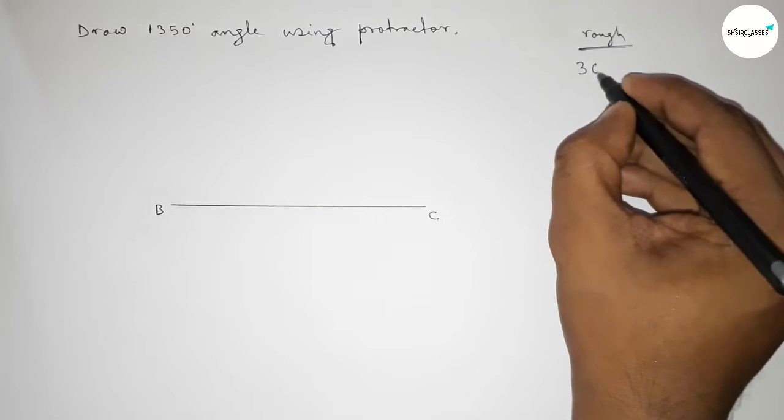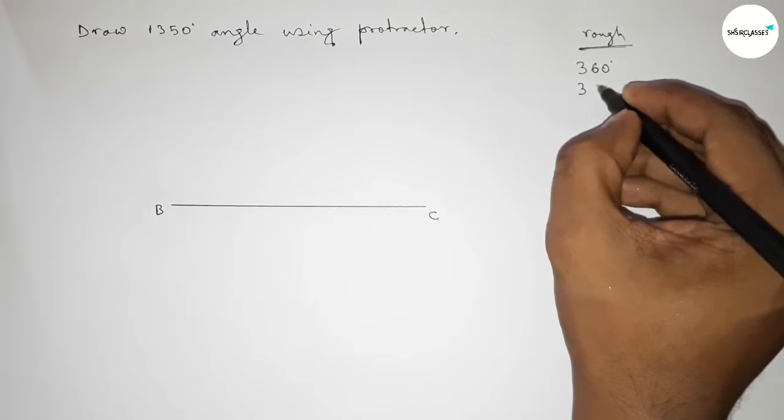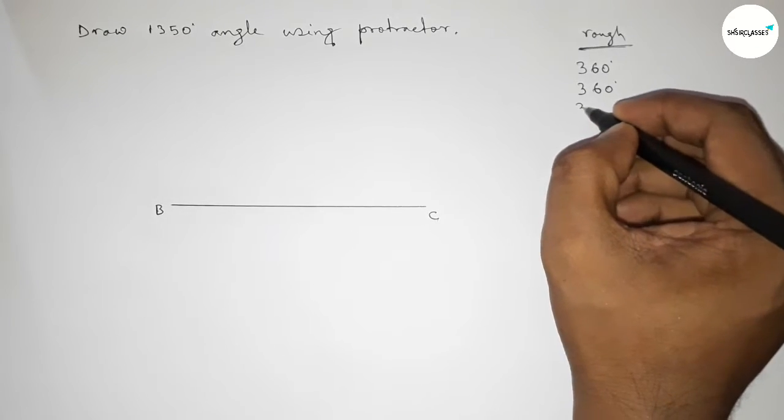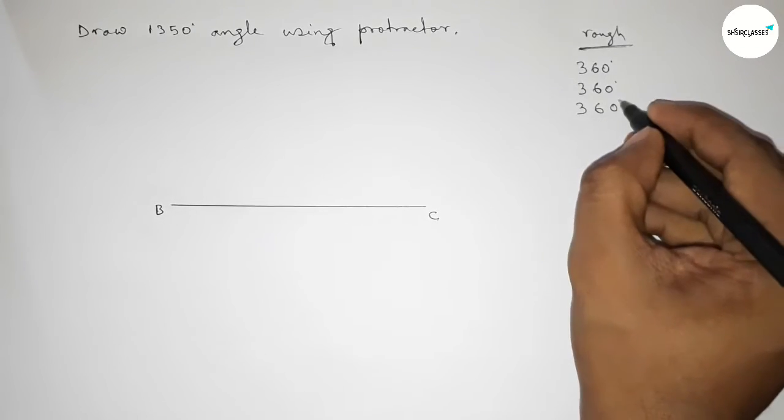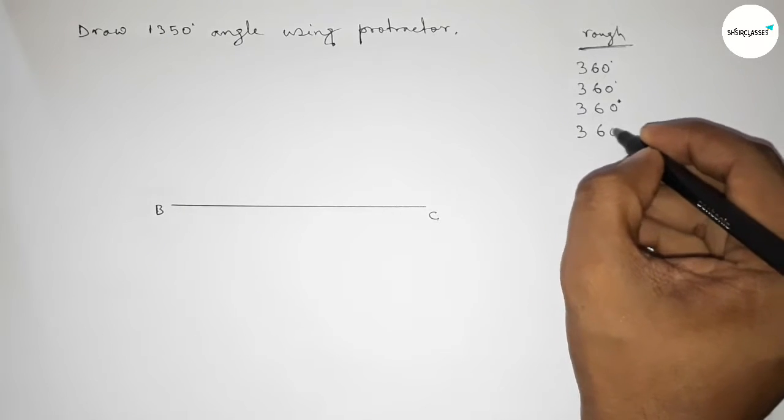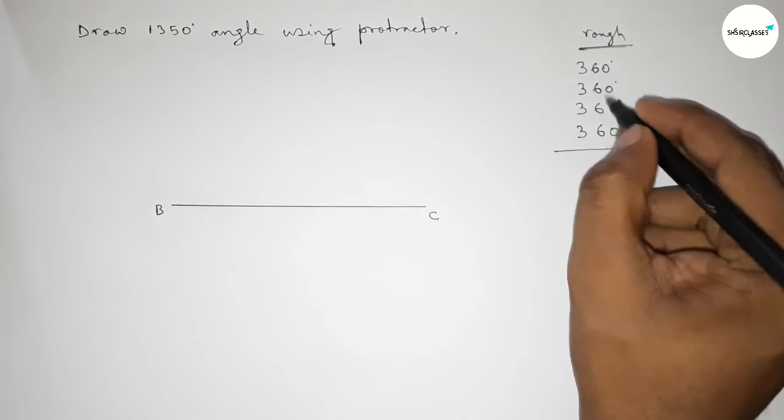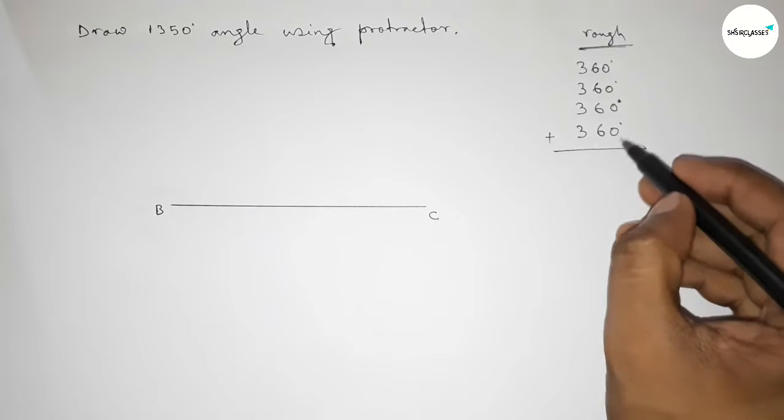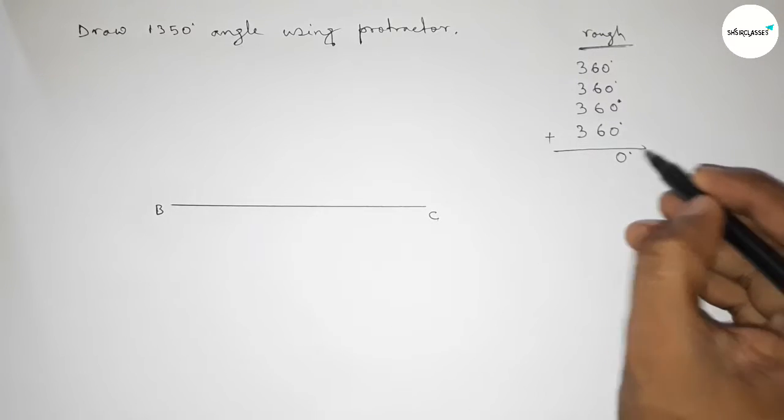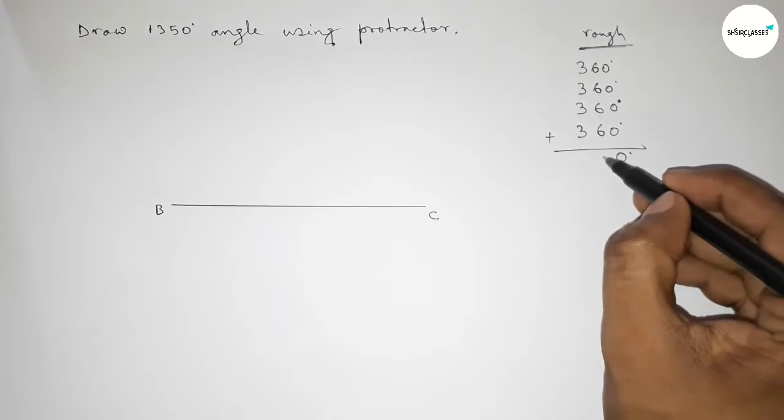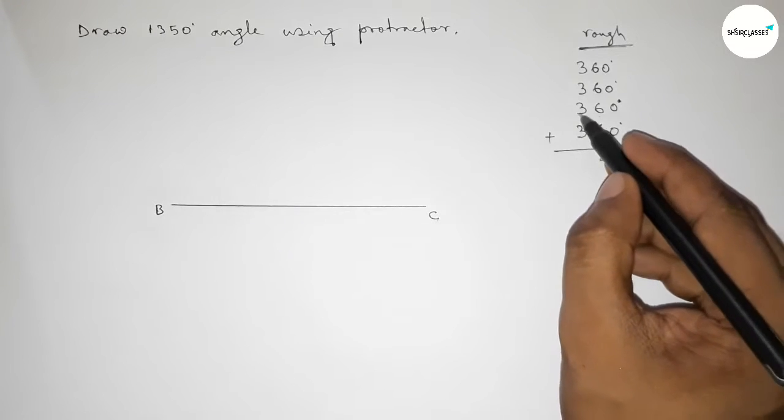First adding 360 degree angle four times. So this is four times, now adding this. So this is zero and this is 24 carry two, so this is 12 plus 2, so 1440 degree angle.